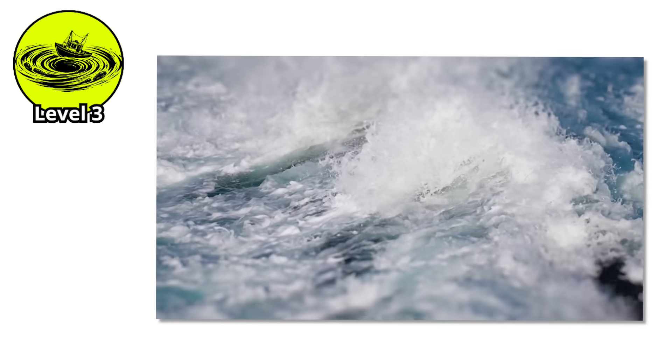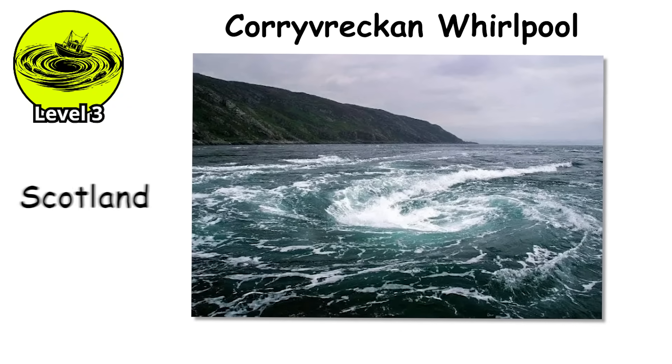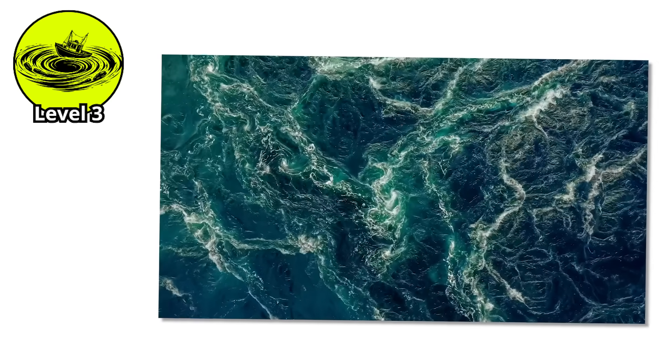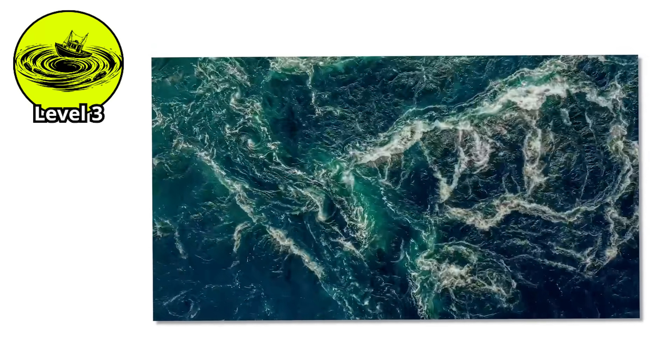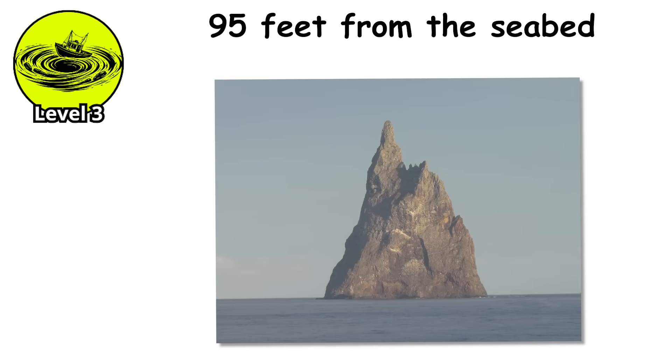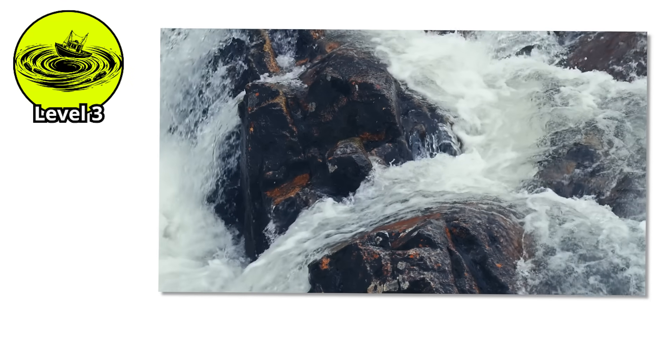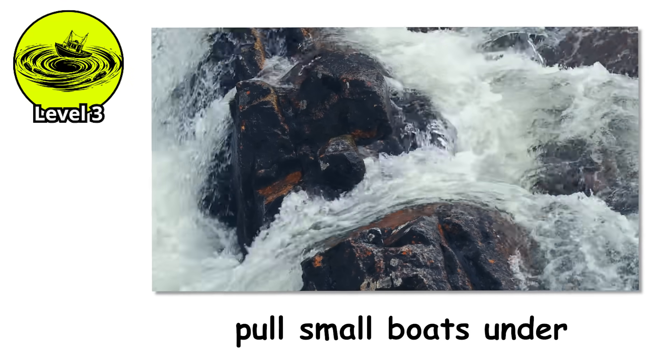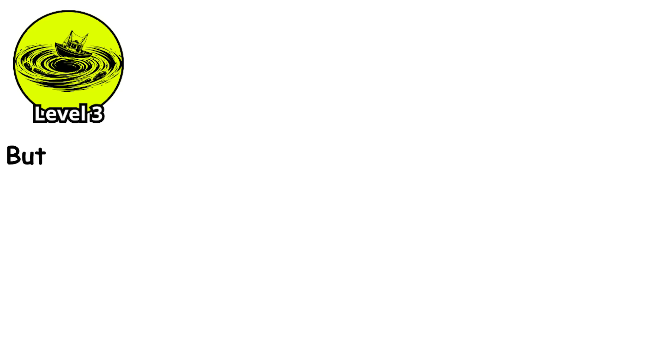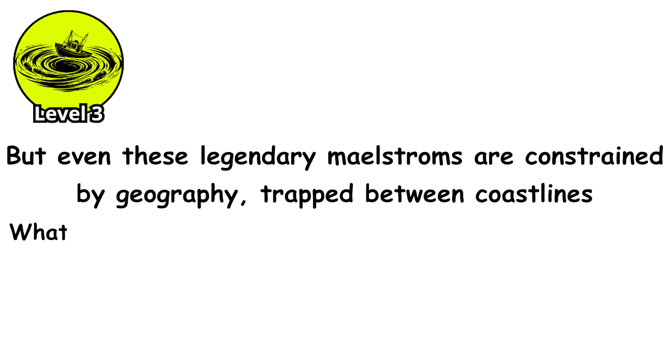The Corrievreckan Whirlpool off the coast of Scotland is similar, classified as the third largest whirlpool in the world. It's caused by water forced through a narrow channel between islands, combined with an underwater pyramid-shaped rock that rises 95 feet from the seabed, creating turbulence that spawns vortexes powerful enough to pull small boats under. The sound carries for miles. The spray can reach 30 feet in the air. But even these legendary maelstroms are constrained by geography, trapped between coastlines. What happens when the entire open ocean starts spinning?